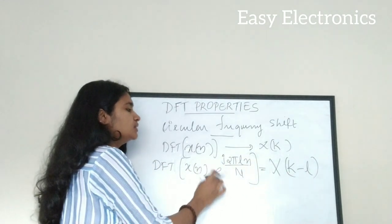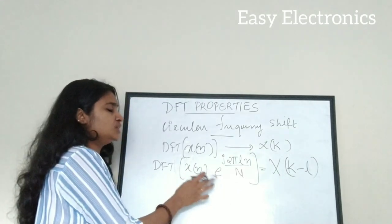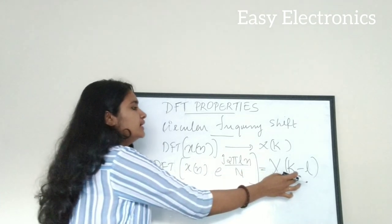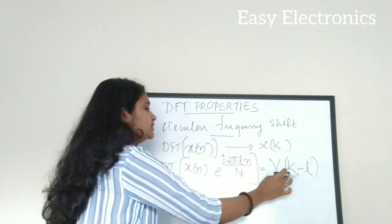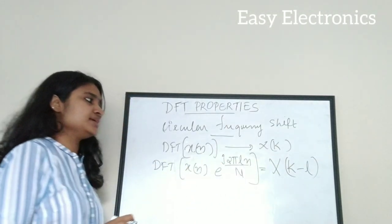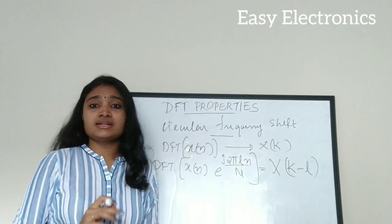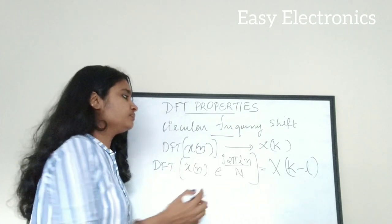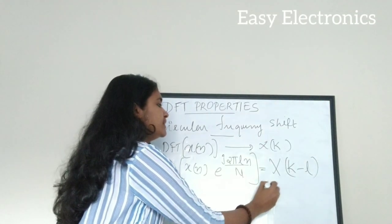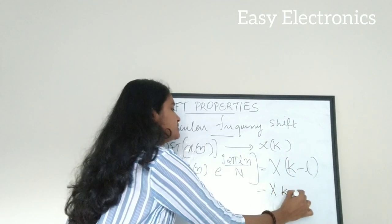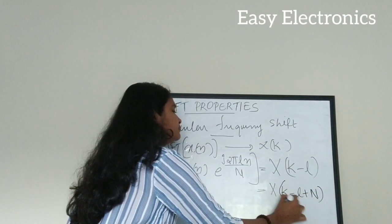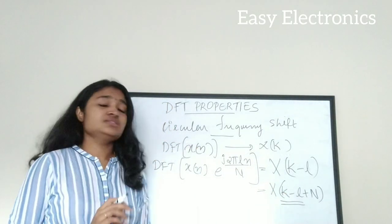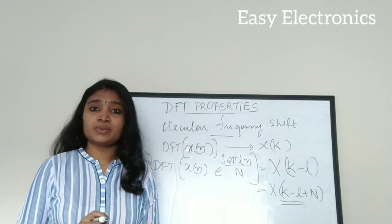This exponential term is similar to the term present in the DFT equation — the only difference is that in place of k we have put l, giving X(k minus l). Applying the periodicity property, we can also write X(k minus l) as X(k minus l plus N). This is how the circular frequency shift property is explained.